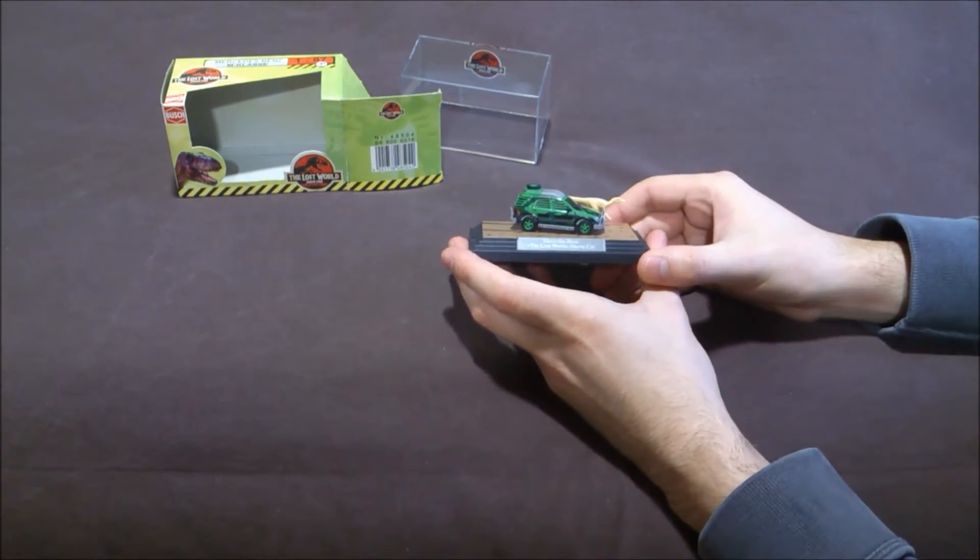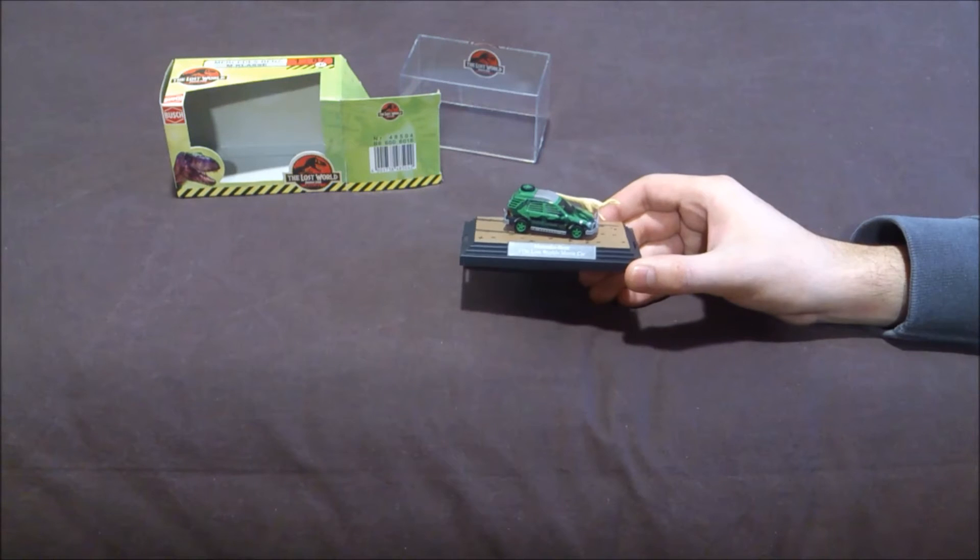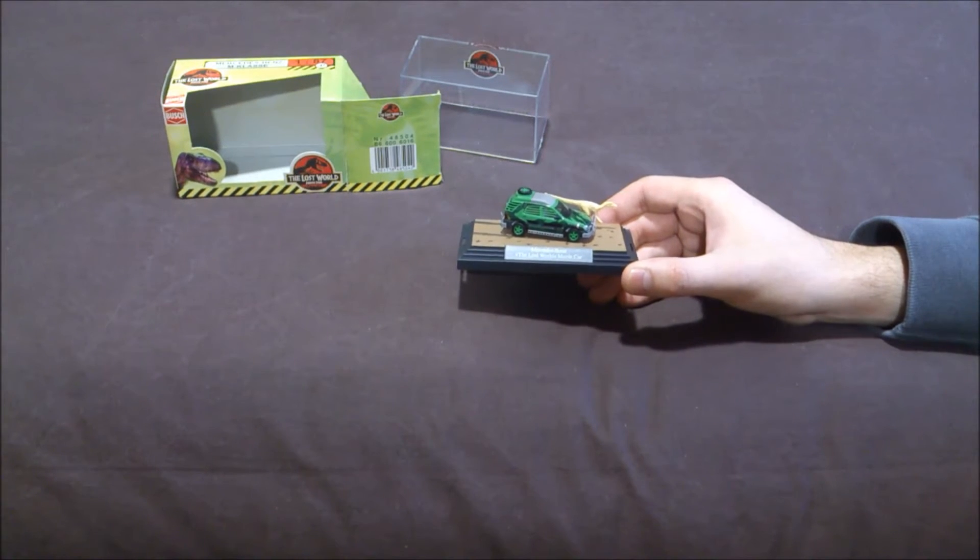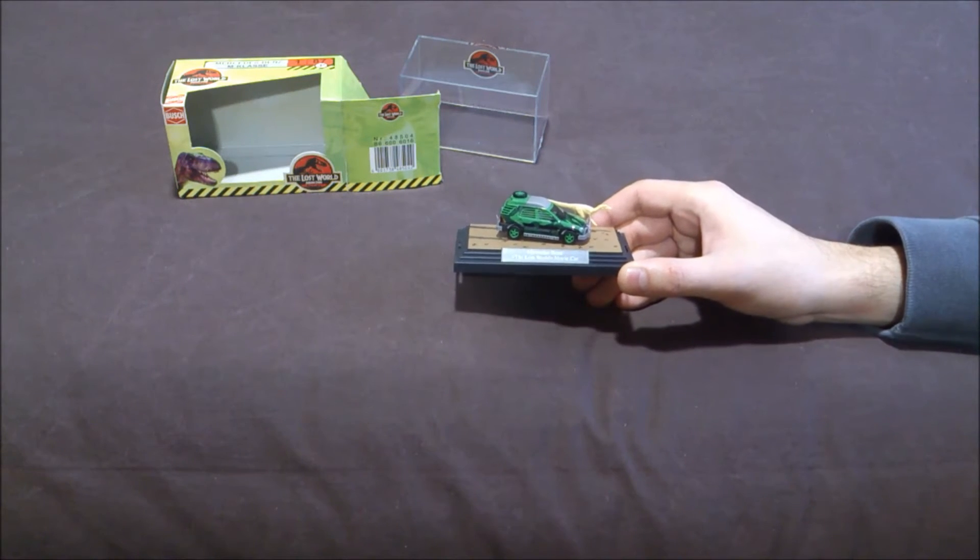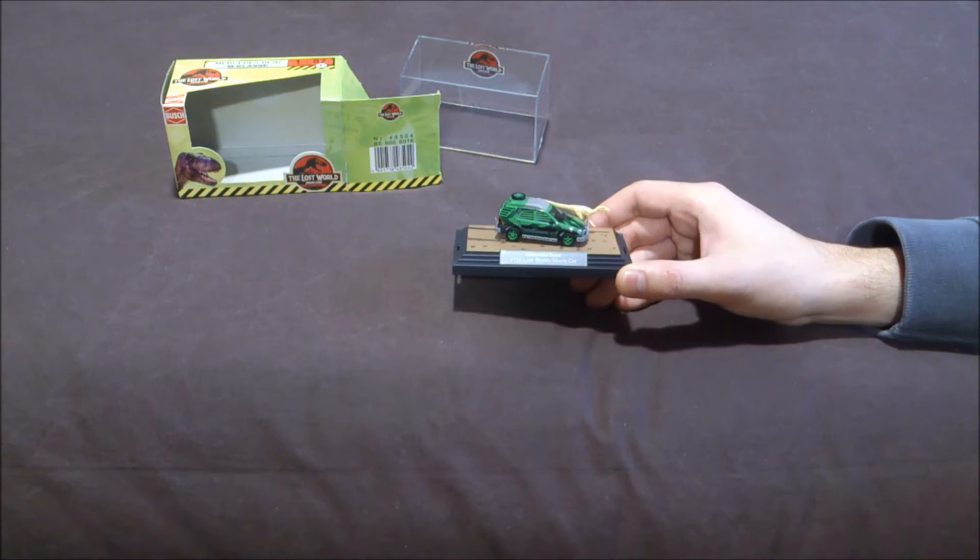This car is really nice. Actually in the movie, there are three different types of Mercedes ML. This one was mostly supposed to be the one of Sarah that they didn't bring to Isla Sorna. But it's actually one of the movie cars.